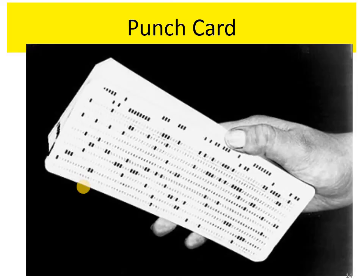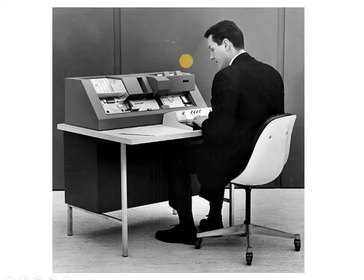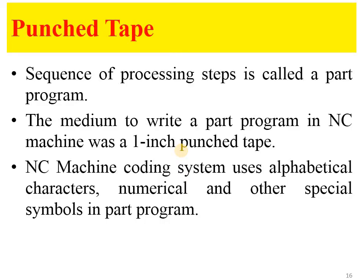You can see here an example of a punch card — this type of punch card is created after NC part programming, and signals are sent to the NC machine for further operations. A person creates the punch tape from the given NC part program. Before starting the NC machine, we create the punch tape from the program, insert it into the machine, and the punch tape creates signals that are transferred to the machine.